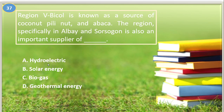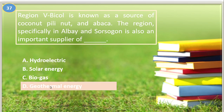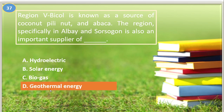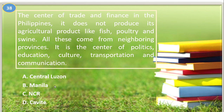Number thirty-seven. Region 4 Bicol is known as a source of coconut, pili nut, and abaca. The region, specifically Albay and Sorsogon, is also an important supplier of: A. Hydroelectric, B. Solar energy, C. Biogas, D. Geothermal energy. The answer is letter D, geothermal energy.